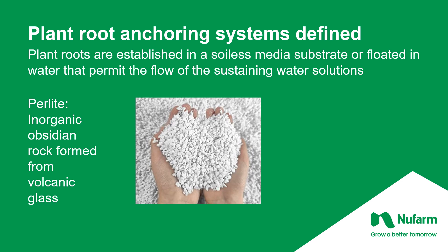The next material, similar to rock wool as an inorganic-based material, is perlite. It's obsidian rock formed from volcanic glass, and it does not break down. Originally this product was used to amend soil because it retains its shape and increases aeration. But with hydroponics, you can grow plants directly in perlite, since all the nutritional materials are being flowed across the plant with the irrigation system.